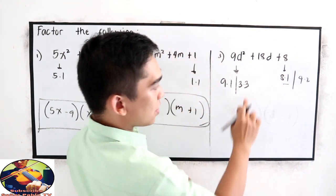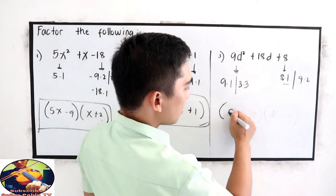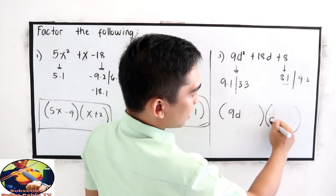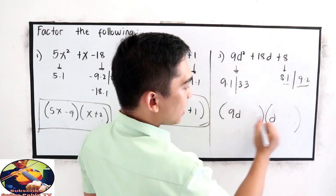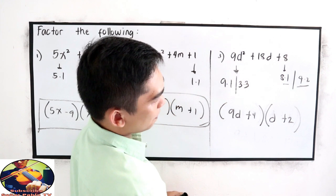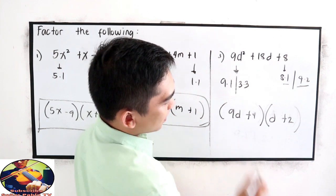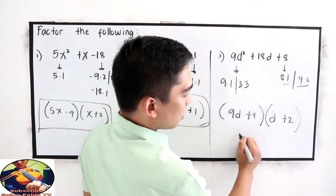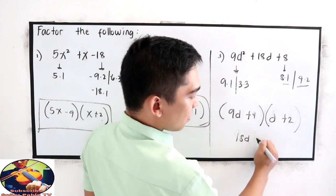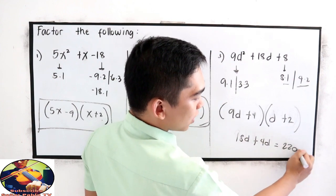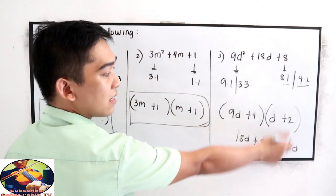This time we're going to use 9d then d, let's try positive 4, positive 2. 9d times 2, 18d, plus 4 times d, 4d, and this is 22. Still, not the same.